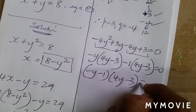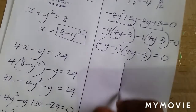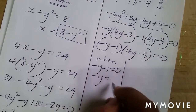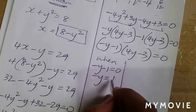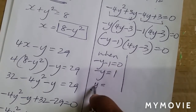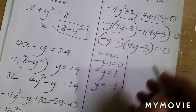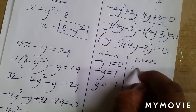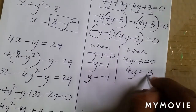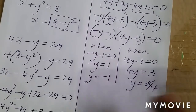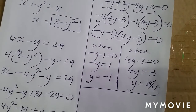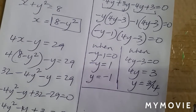So we have the bracket 4y minus 3 appearing twice — that confirms we're on the right track. This factorizes to minus y minus 1 times 4y minus 3 equals 0. When minus y minus 1 equals 0, minus y equals 1, so changing signs gives y equals negative 1. When 4y minus 3 equals 0, 4y equals 3, so y equals three quarters.